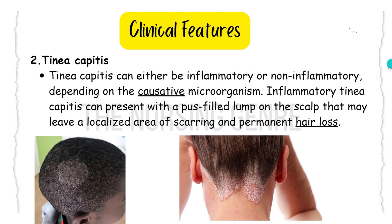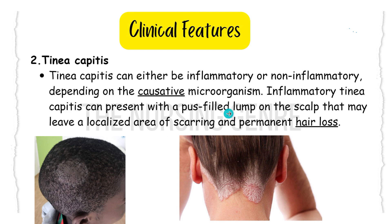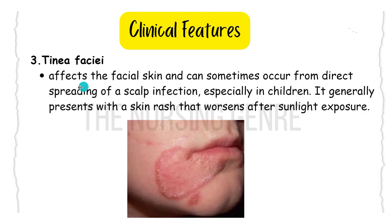Tinea capitis can be either inflammatory or non-inflammatory. Inflammatory tinea capitis can present with a pus-filled lump on the scalp that may leave a localized area of scarring and permanent hair loss. When the pus-filled lump resolves, it leaves scarring and no hair regrowth in the affected area.